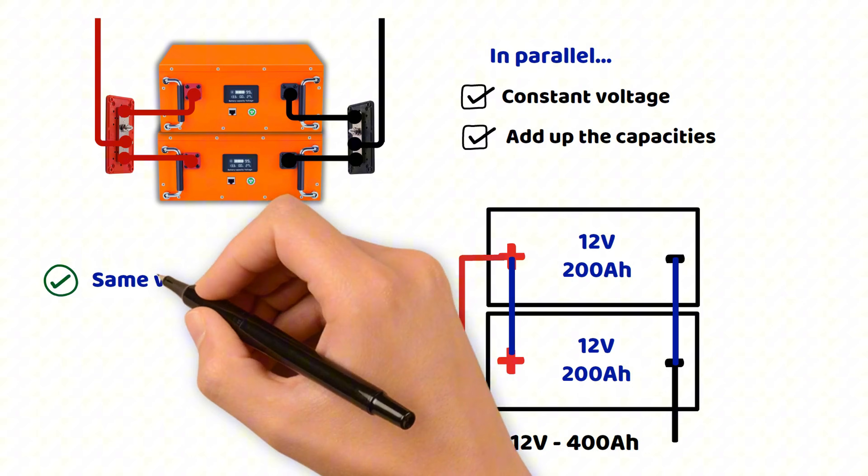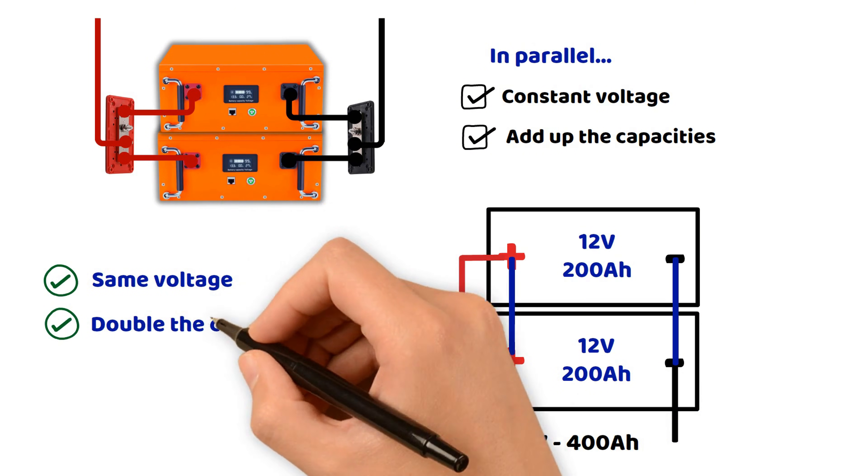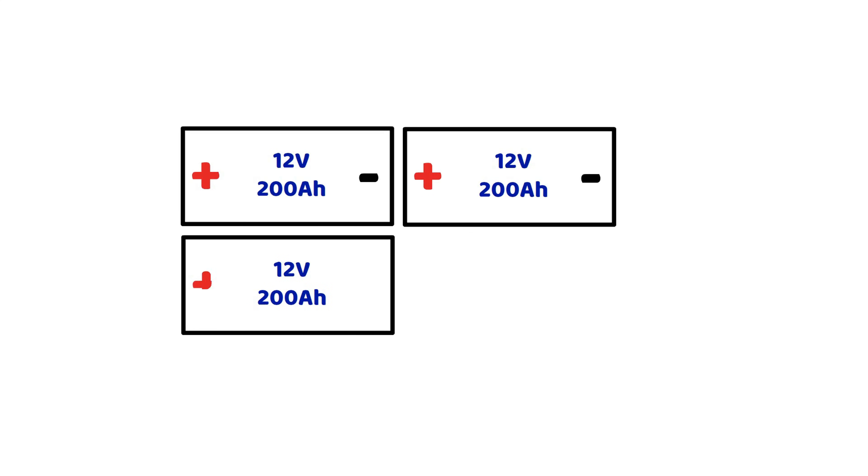Finally, it is possible to combine both methods with a series-parallel configuration, which increases both voltage and capacity. For instance, using four batteries of 12 volts and 200 ampere hours, you can create a system of 24 volts and 400 ampere hours by making two series of two batteries in parallel.